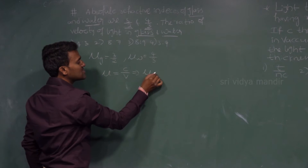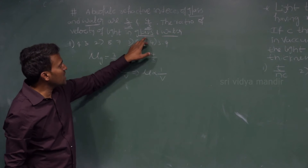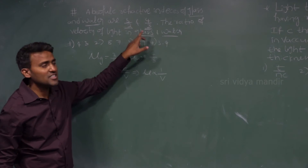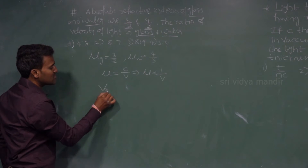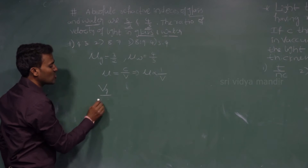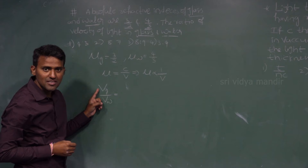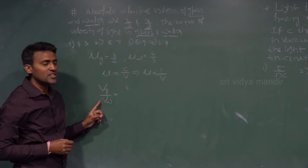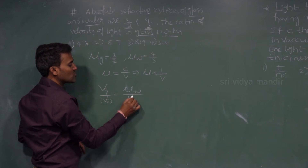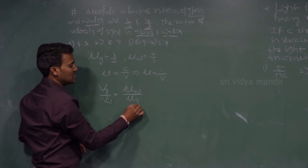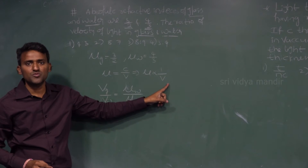According to this, refractive index is inversely proportional to the speed of light in the medium. They are asking for velocity of light in glass to water. So, velocity of glass divided by velocity of water equals refractive index of water divided by refractive index of glass — because it is inversely proportional.